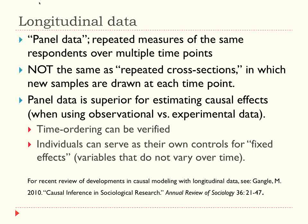Also, individuals can serve as their own controls. Fixed effects models mean we control for the things that people differ on that we can't observe but might not care about. For example, a person's IQ doesn't change over time. So if we have panel data and we see changes, we can rule out that IQ was the cause of those changes. For those interested in a more formal introduction to the advantages of longitudinal data for causal modeling, I recommend the recent Annual Review of Sociology article referenced in these slides.